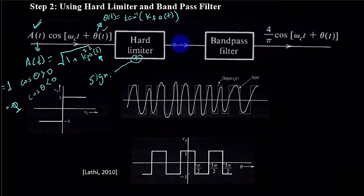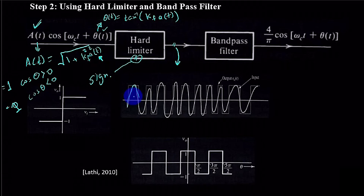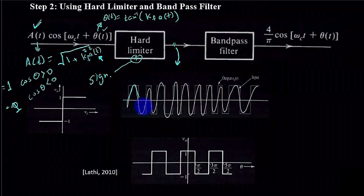These oscillations are the ones we achieve out of the system design, and that delivers the narrowband FM signal. After passing through a hard limiter, if the value is positive it becomes +1, and if the value is negative it becomes −1, so we would have a series of rectangles based on the input signal.